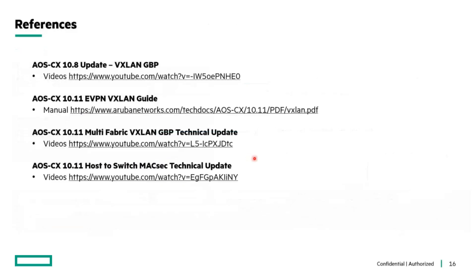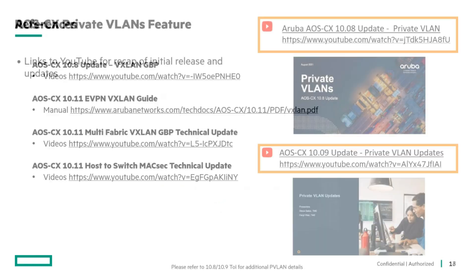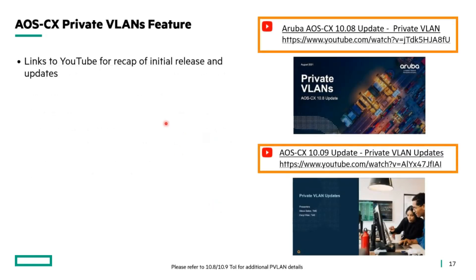Just a couple of extra slides providing references for prior topics — specifically around VXLAN GBP, VXLAN host-to-switch MACsec — all publicly available through YouTube links. For the private VLANs feature, since we've extended it in this release, some additional links are provided. Most of the feature was released in 10.8 and 10.9, and now we're pretty close to full parity across the product line.